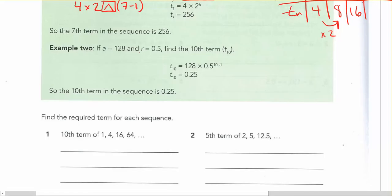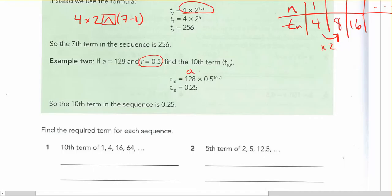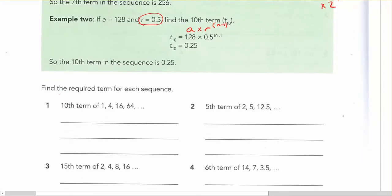So, again, even if you've got an R value that is a decimal, still do the same thing. We're replacing the A times the R to the power of N minus 1. And here, if it's the 10th term, my N is 10.